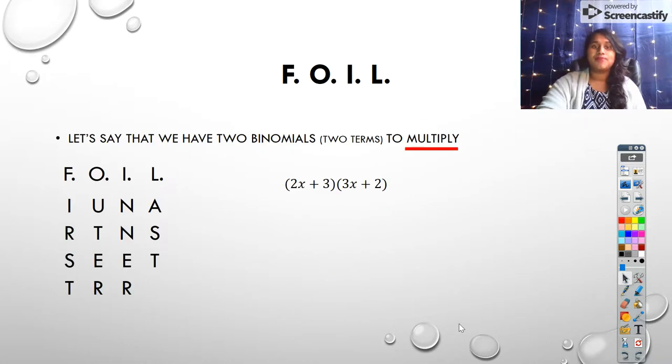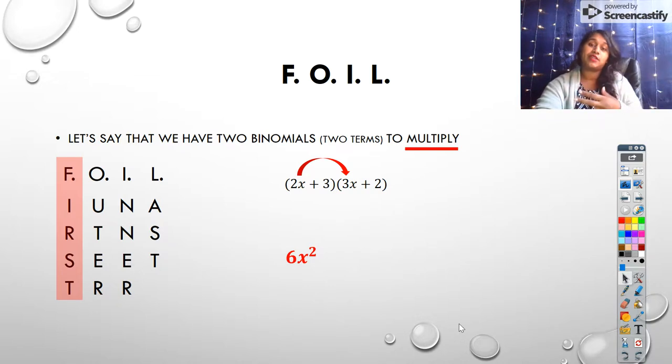So here's what that looks like. We can multiply 2x times 3x. We can multiply our outer terms, 2x times 2. We can multiply our inner terms, 3 times 3x, and our last terms, 3 times 2. But what does that look like total? How do we actually multiply it out and look at our polynomial?